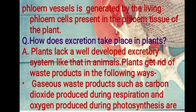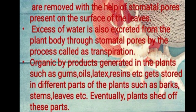Next question: how does excretion take place in plants? Plants lack a well-developed excretory system like those in animals. Gaseous waste products such as carbon dioxide produced during respiration and oxygen produced during photosynthesis are removed through stomatal pores on the surface of the leaves. Excess water is also excreted through stomatal pores by transpiration. Organic byproducts such as gums, oils, latex, and resins are stored in barks, stems, and leaves, and plants eventually shed these parts to get rid of them.